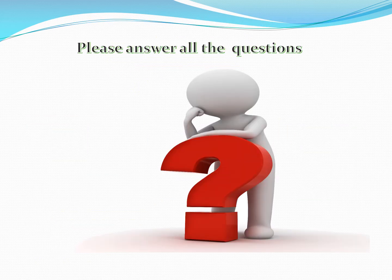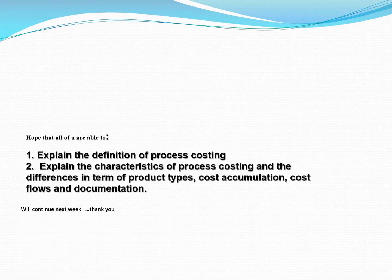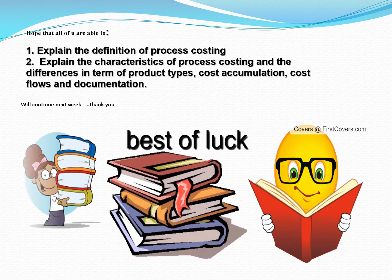Question 1: Give two differences between job order costing and process costing. Question 2: Explain the definition of process costing and give two examples of products using process costing. We hope you are able to explain the definition of process costing and its characteristics, including differences in product types, cost accumulation, cost flows, and documentation. We'll continue next week — stay safe until we meet again, take care.